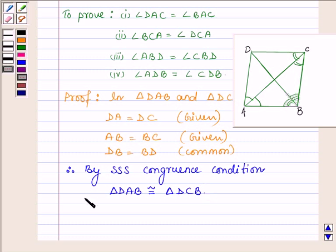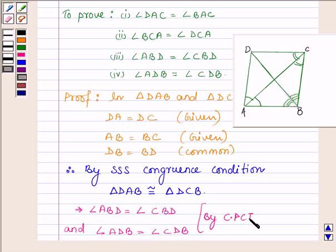which further implies that angle ABD is equal to angle CBD and angle ADB is equal to angle CDB, and this is by CPCT, that is corresponding parts of congruent triangles are equal.